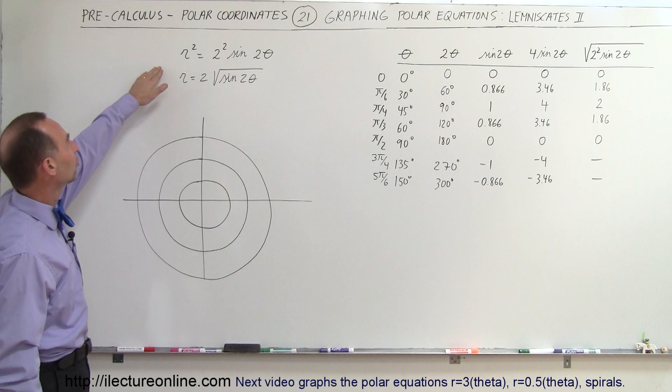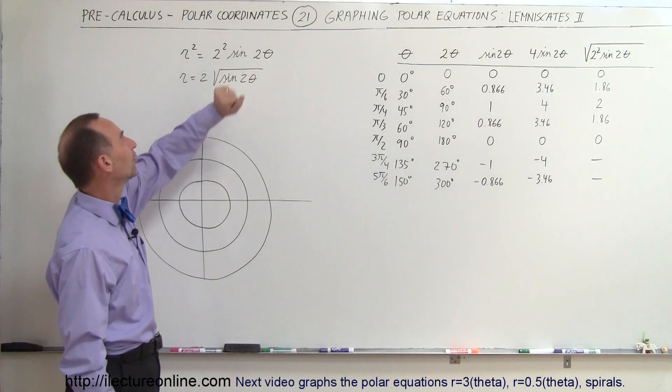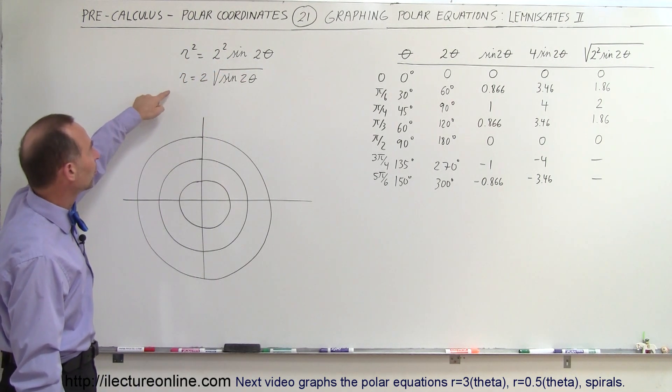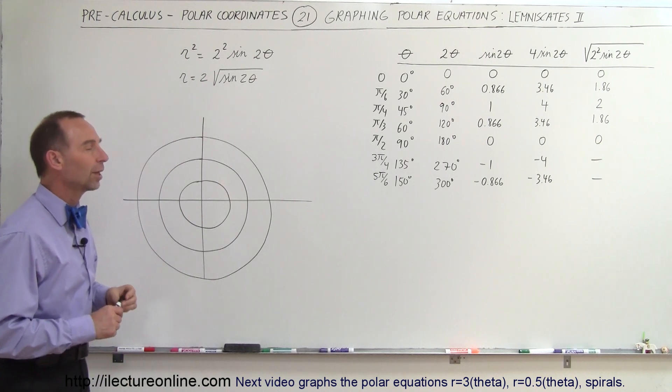So here we have the equation r squared equals 2 squared times the sine of 2 theta, and of course if we take the square root of both sides we get r equals 2 times the square root of sine of 2 theta.